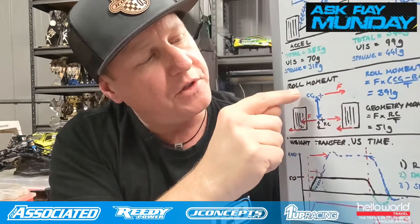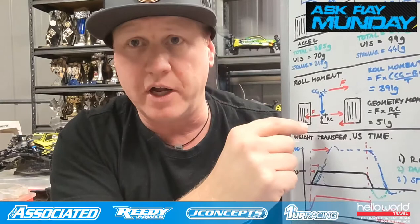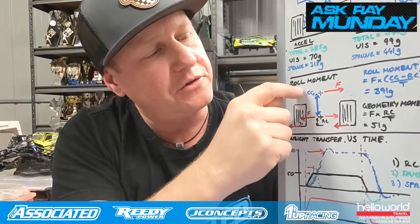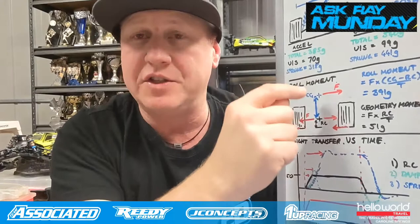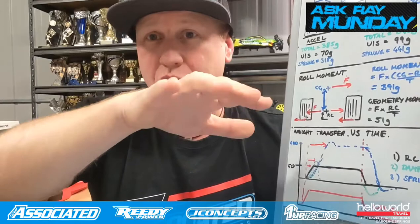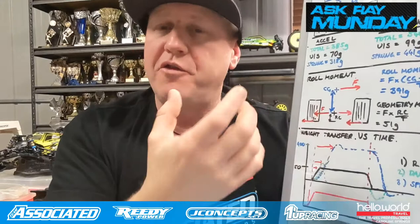With the roll center a little bit above the ground and the center of gravity up higher, what the sprung mass actually feels is the height from the center of gravity to the roll center — not the full height from the center of gravity to the ground. So if the roll center is 5 mm above ground and the center of gravity is 45 mm, only 40 of those 45 mm of height is actually creating a moment trying to roll the sprung mass. If the roll center were as high as the center of gravity, there would be no roll in the sprung mass at all.